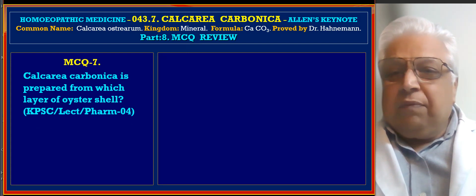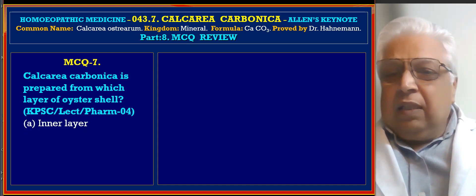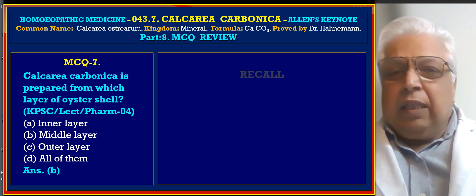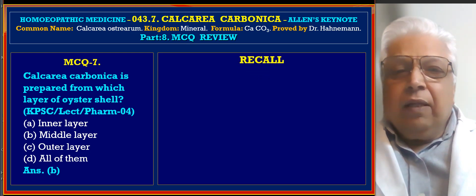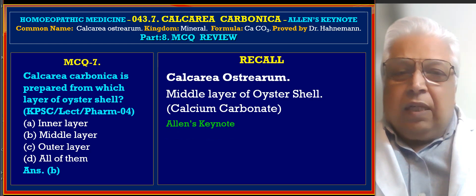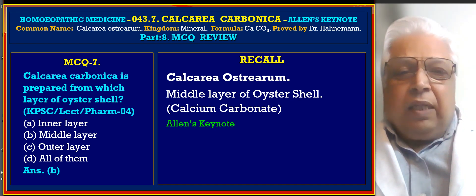MCQ 7: Calcarea Carbonica is prepared from which layer of oyster shell? A. Inner layer, B. Middle layer, C. Outer layer, D. All of them. Answer is B, middle layer. Reference from Allen's Keynote: Calcarea Carb is prepared from the middle layer of oyster shell — Calcarea Carbonate.